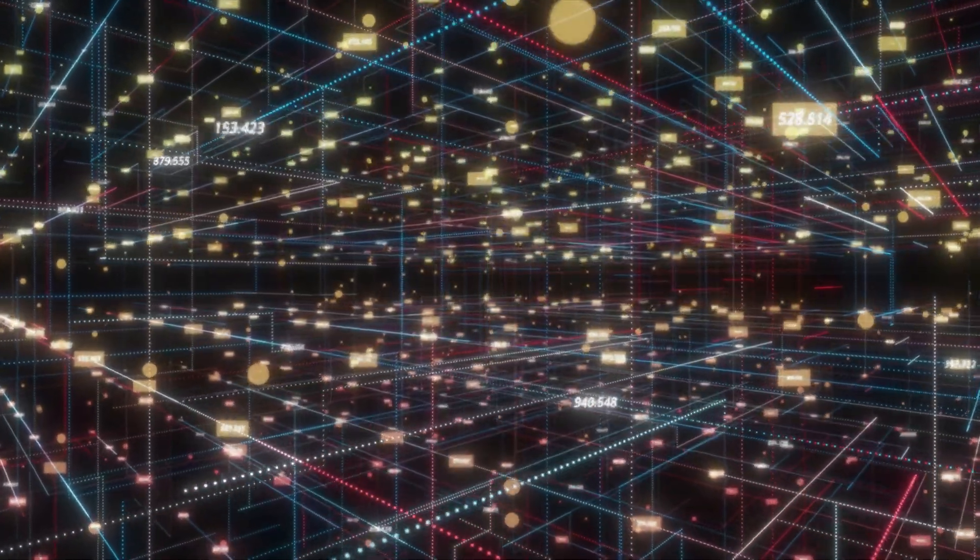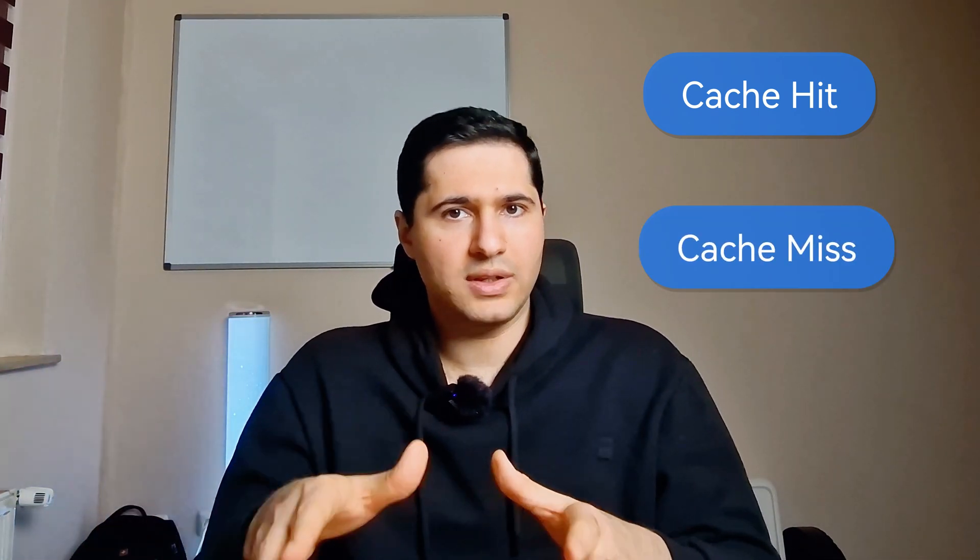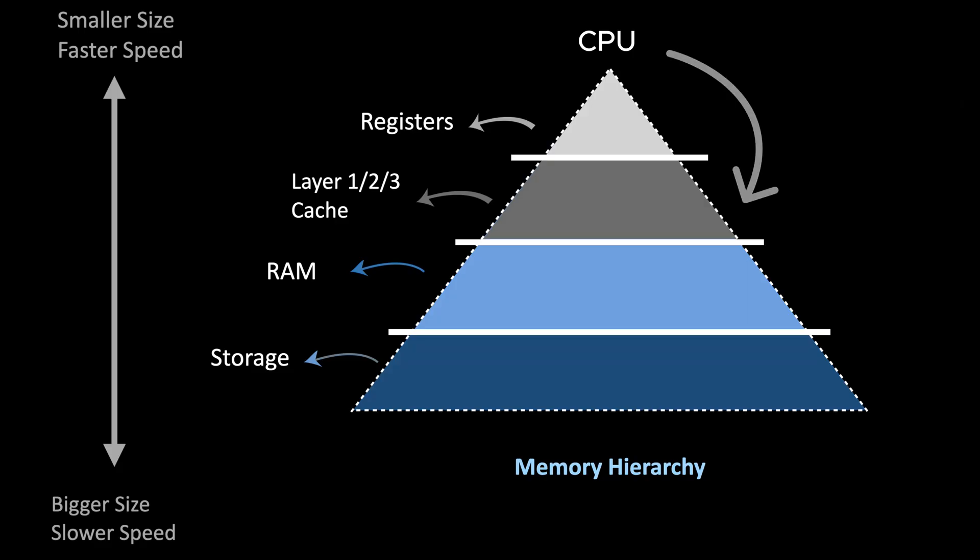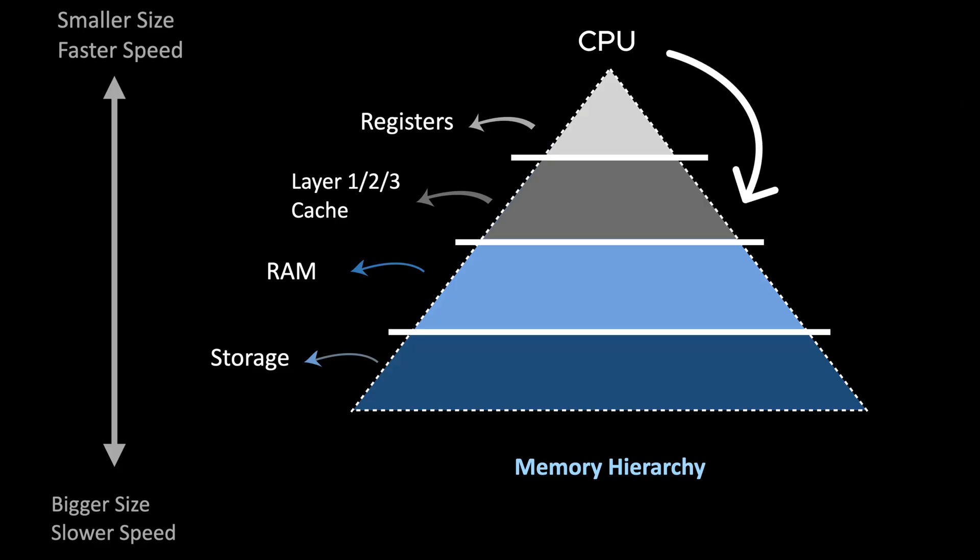This is where cache comes into play. If the CPU can fetch the data from cache, we call it a cache hit, and it's super fast. But if the data is not in the cache, it's called a cache miss, and in that case the CPU needs to call RAM to fetch the data. Modern CPUs have predictive algorithms that enable the CPU to predict what data needs to be available in cache in order to make data fetching faster — this is called prefetching. It helps make memory management more predictive, even when the programmer doesn't write the program in an efficient way.